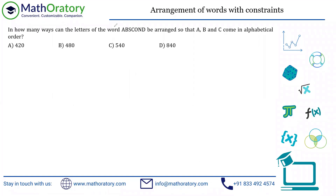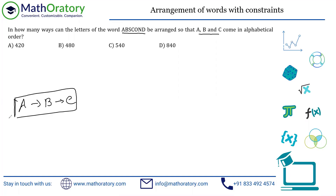Question 4 — a straightforward PNC question: find the number of ways the letters of the word ABSCON can be arranged so that A, B, and C appear in alphabetical order. Whatever word we form, A must come before B and B must come before C. In these kinds of questions, always check how many letters are distinct — here all seven letters are distinct.